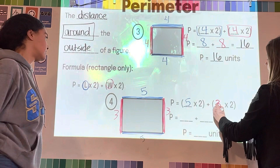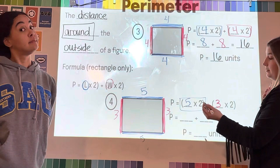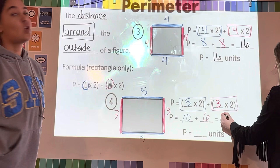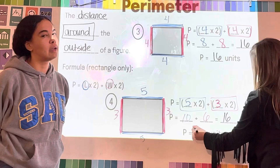Same process over here. I'm going to start with my length, length times two, five times two, width three times two, and I'm going to carry it down. So five times two gives me a product of ten. Three times two gives me a product of six. If I add them together, ten plus six, I get a sum of 16.